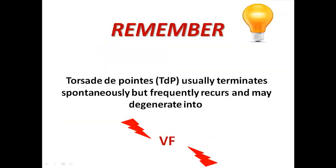Remember that Torsade de Pointe usually terminates spontaneously but frequently recurs and may degenerate into VF. Do not reassure yourself just because the run terminates spontaneously — it will recur and this patient has a very high risk of VF. You need to check whether it is congenital long QT syndrome or acquired, check electrolytes, check medications, and most probably this patient will need antiarrhythmic medication such as IV magnesium sulfate.